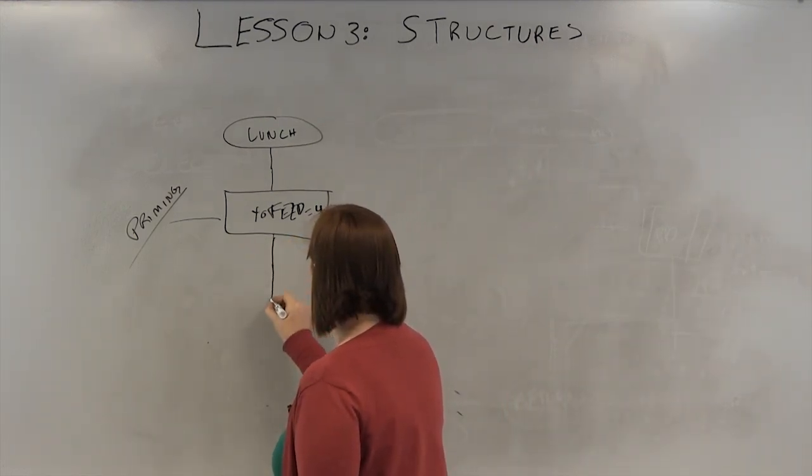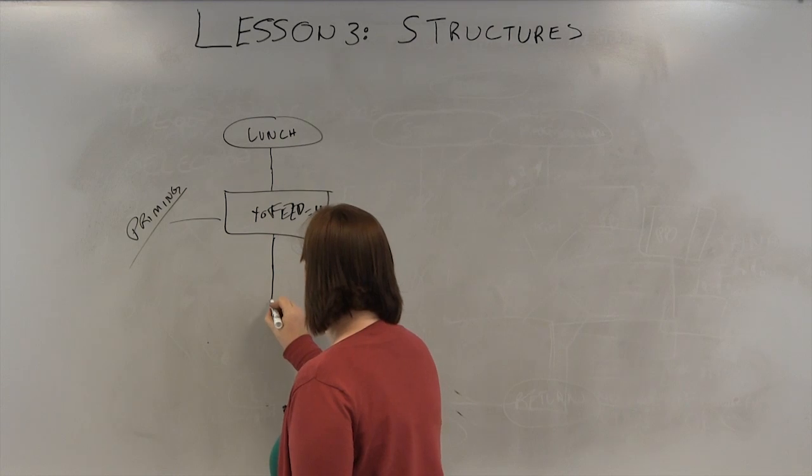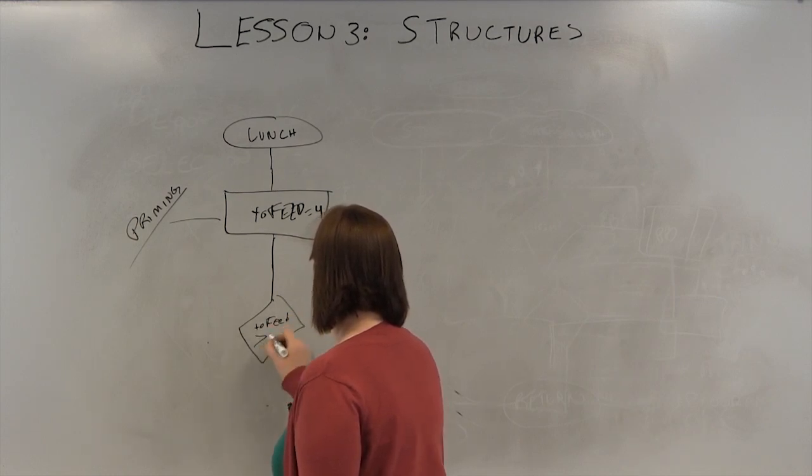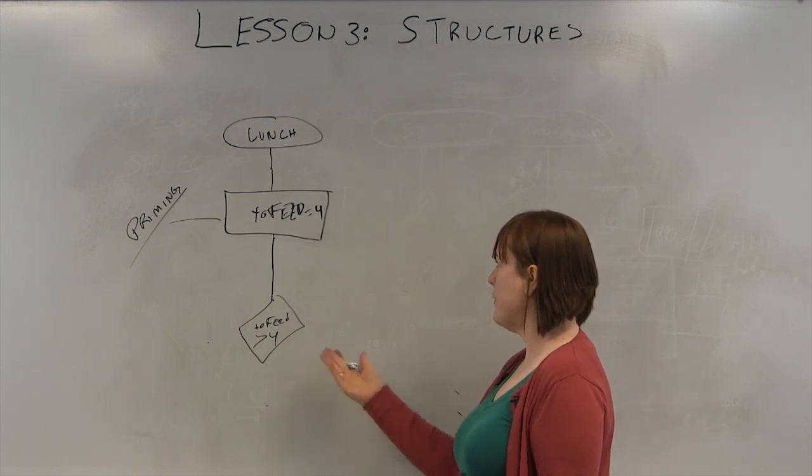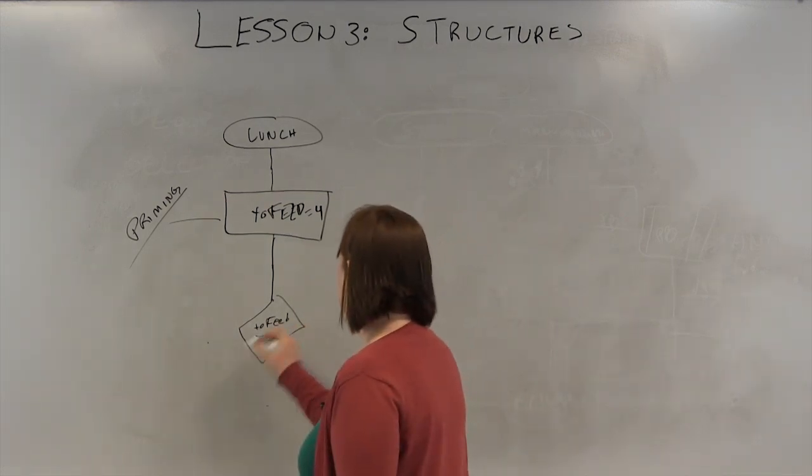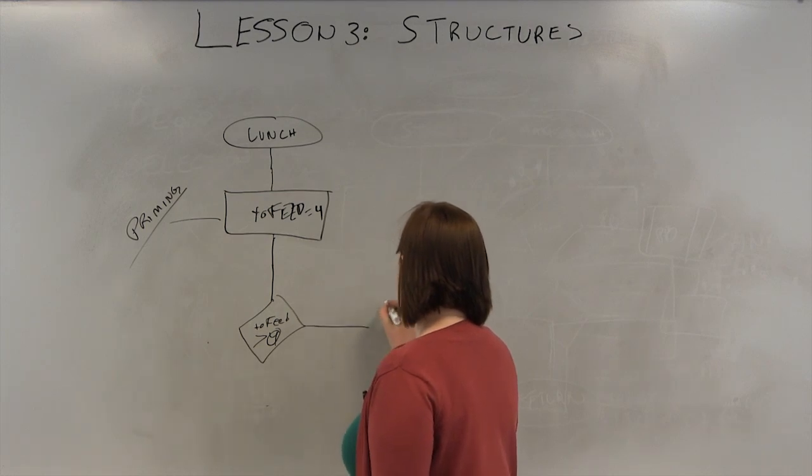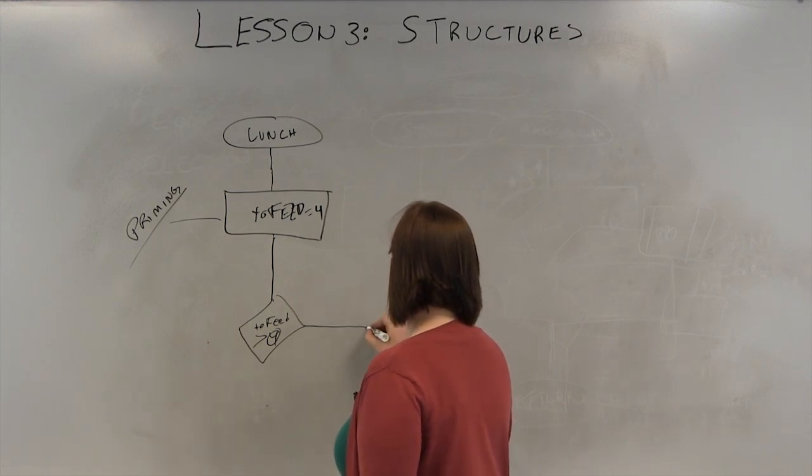So here we would see if they were all fed, to feed greater than 4. If it's still greater than 0, if we have not fed them all, we would get type of sandwich. I'm simplifying these to put it at a high level.